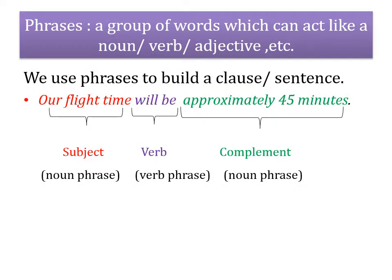Now let's move on. Even within a clause we observe there are different parts or sections — a clause consists of different sections called phrases. A phrase is a group of words which can act like a noun, a verb, an adjective, an adverb, or a preposition. Phrases are used to build a clause or a sentence.